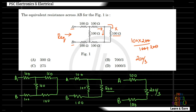What is the resistance between A and B? We have 100 ohm, 100 ohm, 200 ohm, 200 ohm, 300 ohm, 300 ohm — three are in parallel. We get 800 ohm and 300 ohm.